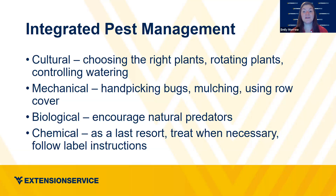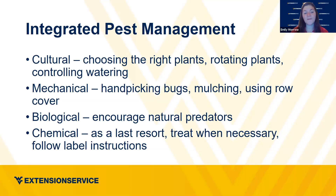Biological pest control occurs all throughout the growing season by encouraging natural predators. We reference IPM even when talking about critters with four legs — mice, voles, or rabbits. I like to tell everybody I have biological pest control in my house because I have three cats: they're a mouse control, sometimes a vole control, and even a stink bug control. Then we always say chemicals should be your last resort, only when necessary, and always follow label instructions because the label is the law.